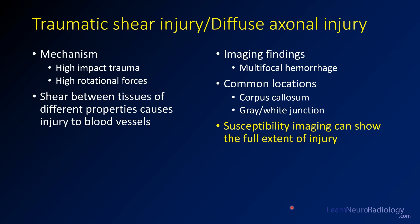This is a case of traumatic shear injury, which is sometimes referred to as diffuse axonal injury. The mechanism is high-impact trauma, frequently with rotational forces. You get shear between tissues of different properties, causing injury to blood vessels, which can produce hemorrhage and edema in those areas.